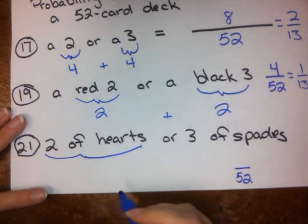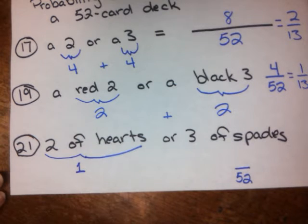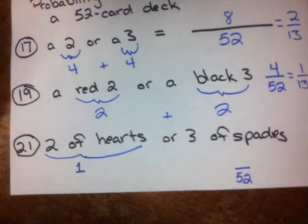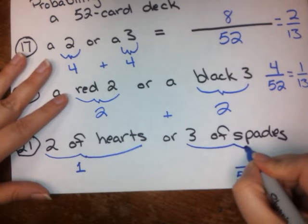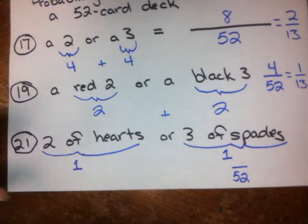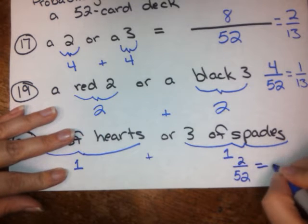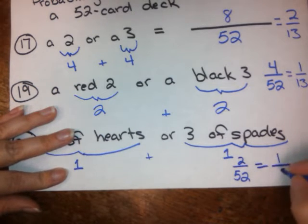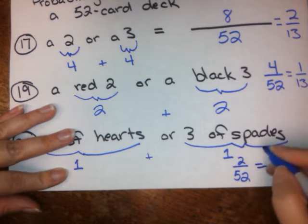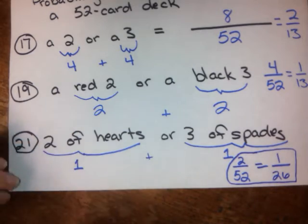Well, how many 2 of hearts are there in a deck of cards? There's only one 2 of hearts in that deck of cards, there are no more unless you've got a really bad deck or somebody's trying to cheat you. And the same thing goes for the 3 of spades - there's only one 3 of spades in every standard 52-card deck. So we have 1 plus 1, that's 2 out of 52. You can simplify it to 1 out of 26.